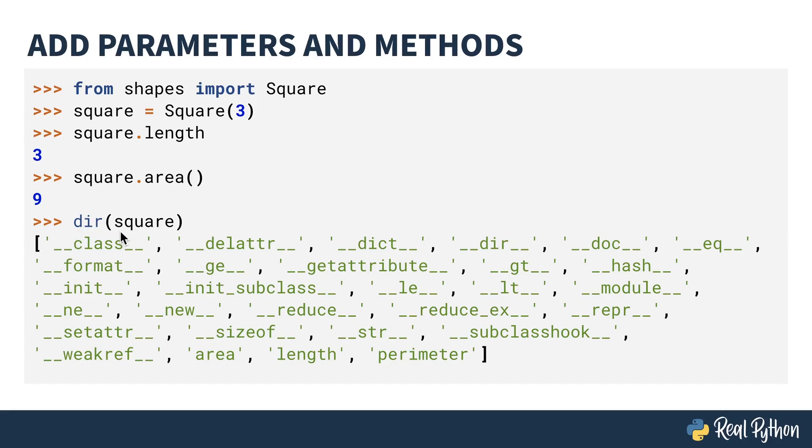In addition to having the class as before, on the bottom right side now, you can see area, length, and perimeter, the methods and attributes that were defined in the class.